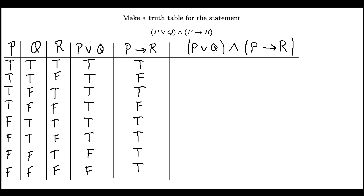Now to fill in the final column here, I just need to look at the two columns I just generated. I need to look at the P or Q and the P implies R. So first, I have true and true, that's true. Then true and false is false. True and true is true. True and false is false. True and true makes true. True and true makes true. False and true makes false. False and true makes false.